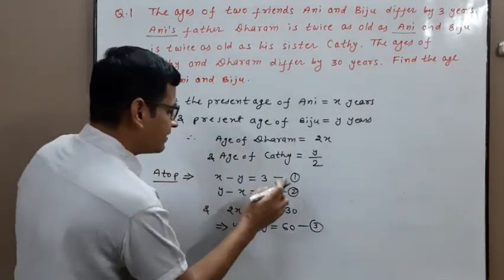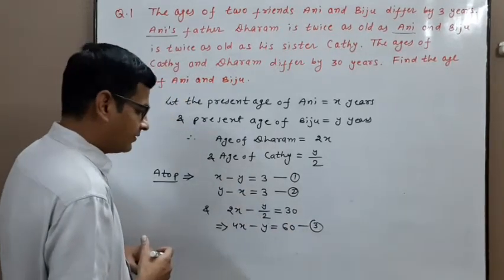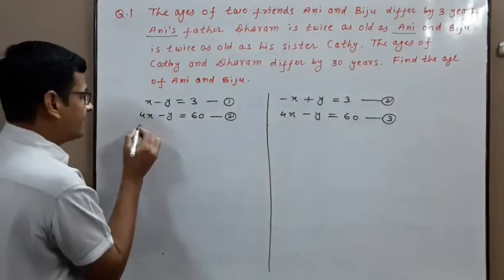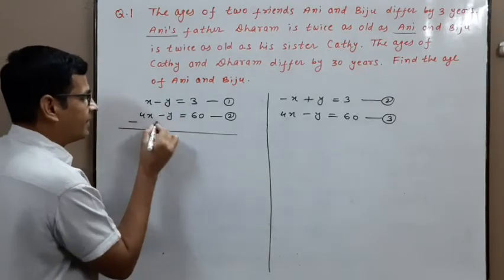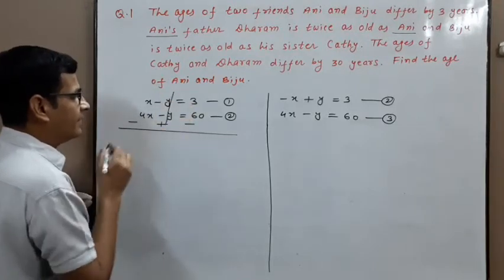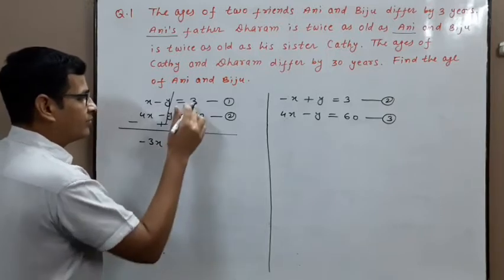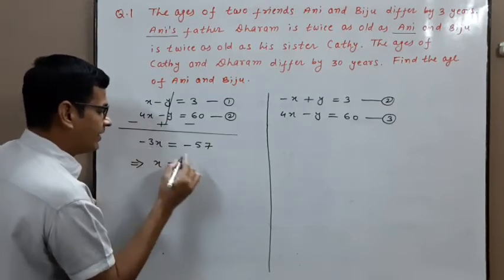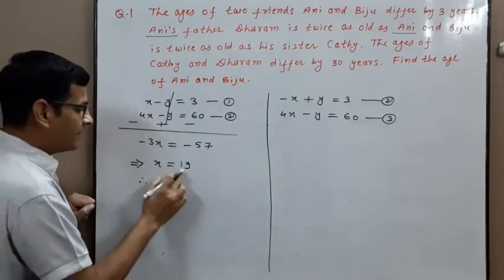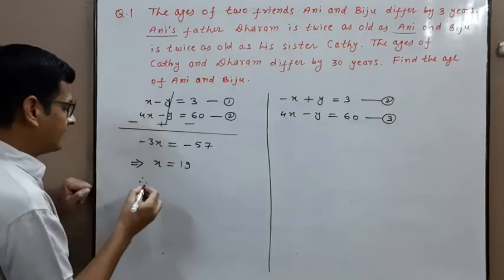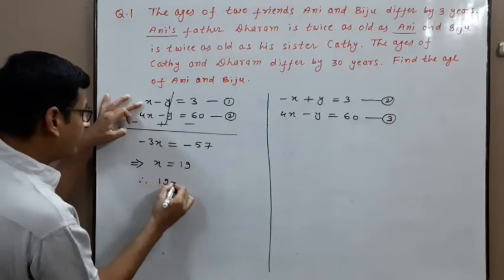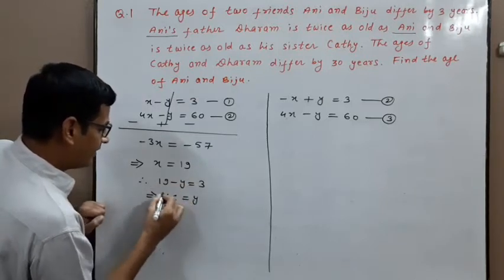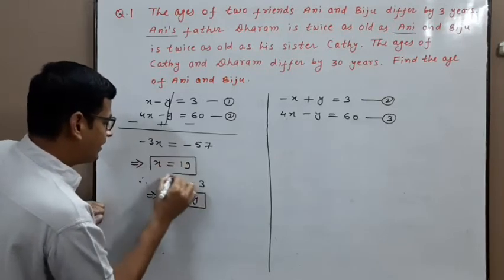Now there are two cases: first using equations 1 and 3, second using equations 2 and 3. Subtracting equation 1 from equation 3: X minus 4X gives minus 3X equals 3 minus 60 equals minus 57. Dividing both sides by minus 3: X equals 19. So age of Ani is 19. Substituting X equals 19 into equation 1: 19 minus Y equals 3, so Y equals 16. Age of Biju is 16.